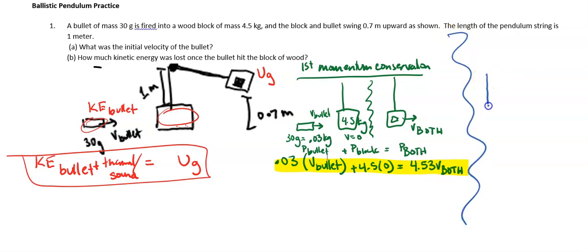So now we have, they're moving off together. So this is velocity of both. And then they go up to some height above the ground. So they move up to a height of 0.7 meters. So the collision already happened. So this is now a closed system.